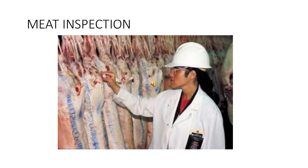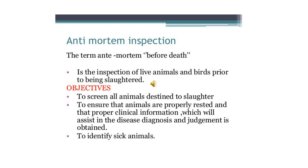Animals intended for slaughter are subjected to proper ante-mortem and post-mortem inspection by qualified veterinary staff. Ante-mortem inspection means the inspection of live animals and birds prior to being slaughtered. Its objectives are to screen all animals destined for slaughter, to ensure that animals are properly rested, that proper clinical information for disease diagnosis is obtained, and to identify sick animals.